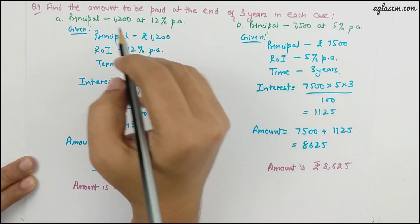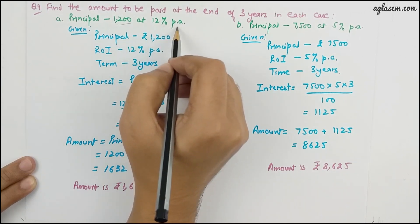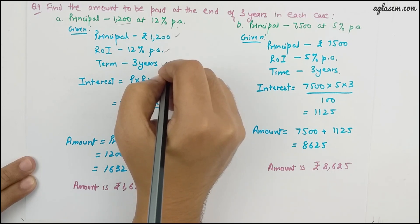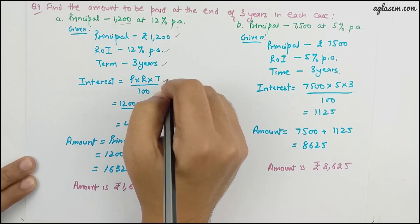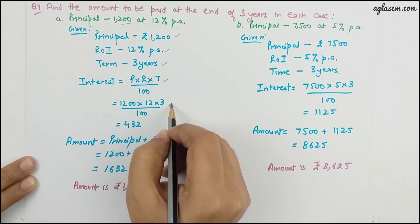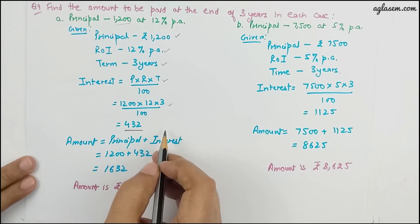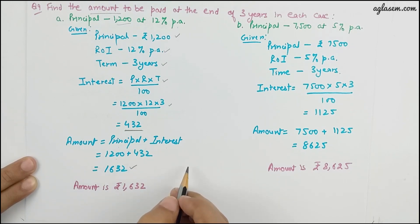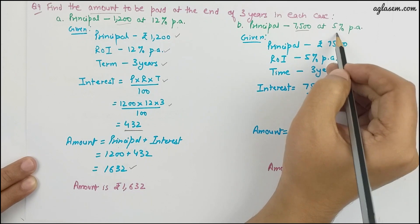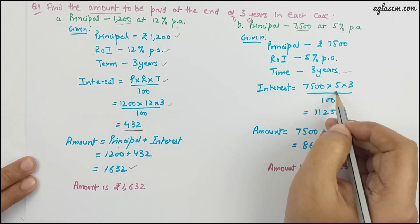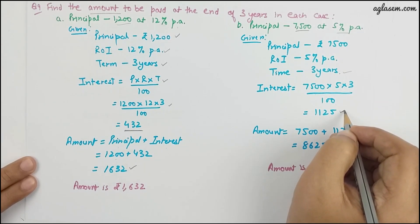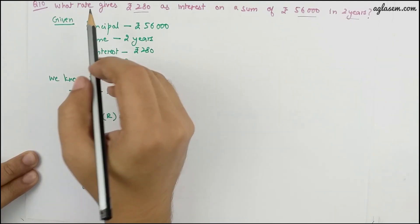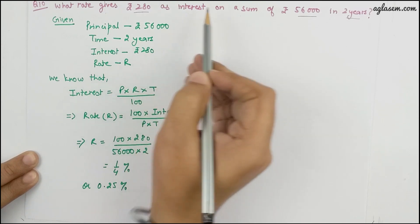Question 9: find the amount to be paid at the end of 3 years. Case (a): principal is 1,200 rupees at 12 percent per annum. Interest is P×R×T divided by 100, so 1,200 into 12 into 3 divided by 100 equals 432 rupees. Amount is 1,200 plus 432, giving 1,632 rupees. Case (b): principal is 7,500 at 5 percent per annum. Interest is 7,500 into 5 into 3 divided by 100, which is 1,125. Amount is 7,500 plus 1,125, giving 8,625 rupees.